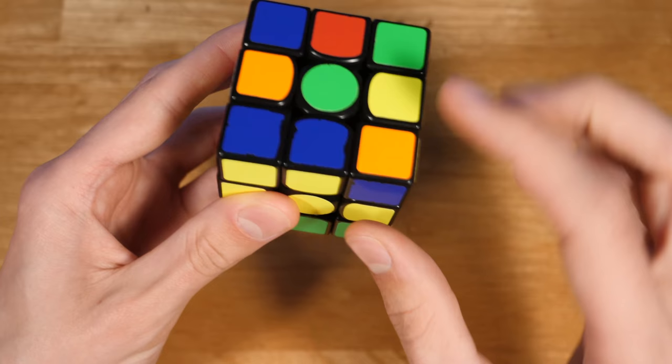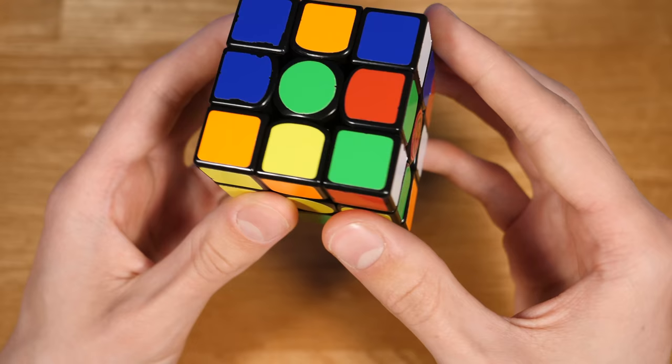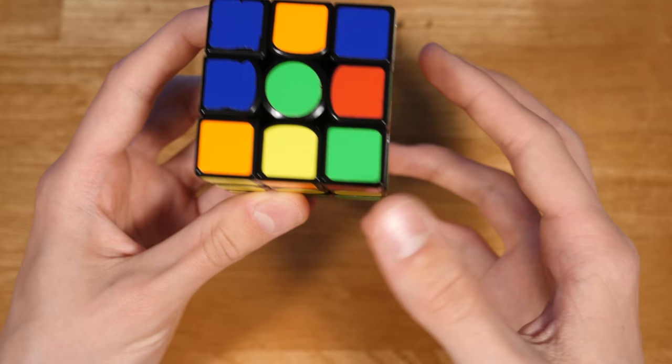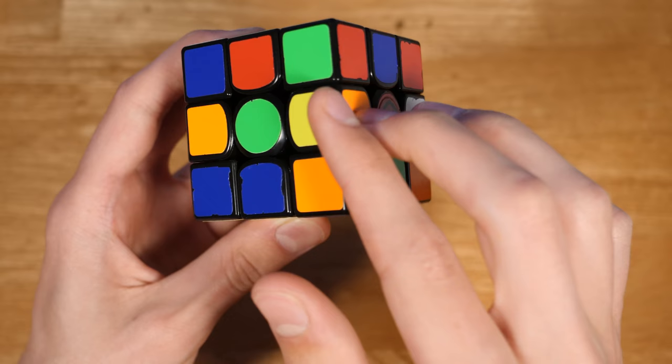So his first move is to do an F to match up this kind of 2x2x1 block. This is a common technique in X-cross solving. Then of course you saw the rest of the cross, but I'll do it slowly for you guys here.